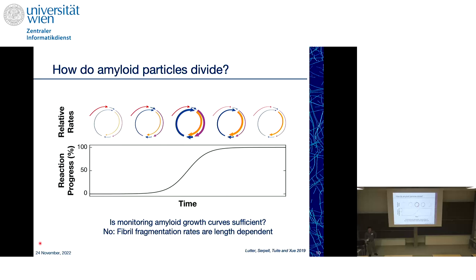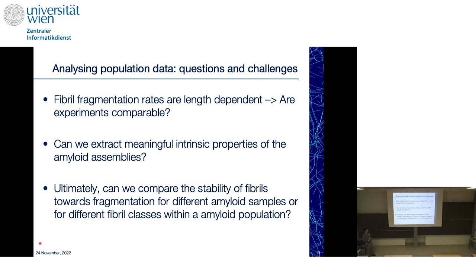As an experimentalist, I wanted reliable information about the division process without everything else going on simultaneously. So we designed experiments to just look at fragmentation: we waited until the end of a reaction, took those particles and seeded them — making very long filaments — then added mechanical perturbation so fragmentation became the dominant process. The questions we wanted to answer were: can we do this experiment sensibly, does it depend on starting distribution, and can we extract meaningful intrinsic properties to compare fragmentation stability between different amyloids?